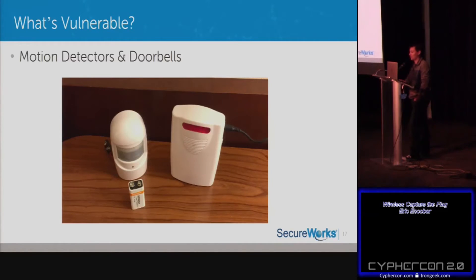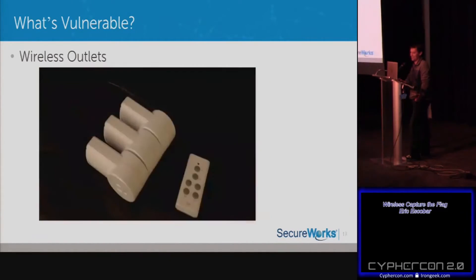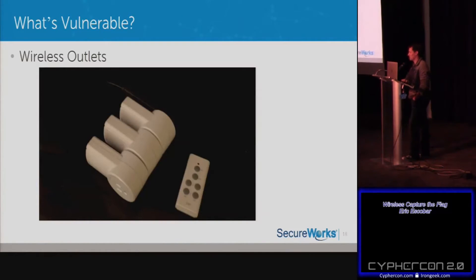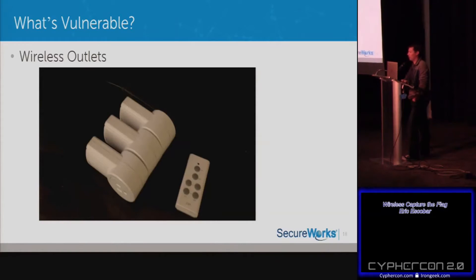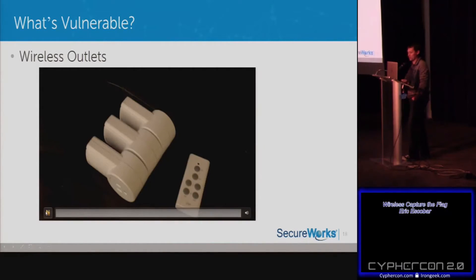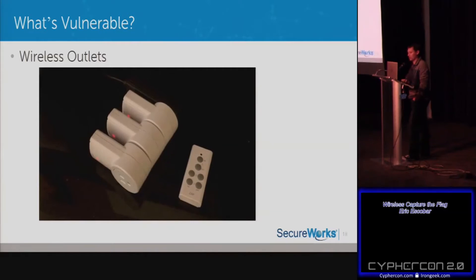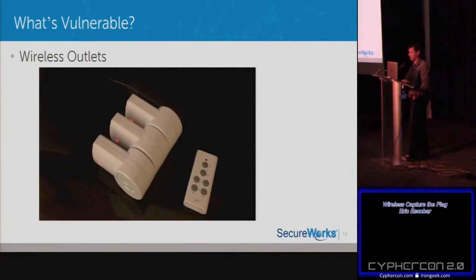Some other vulnerable devices: these eTech City wireless outlets are great for controlling backyard lights, and you can replay-attack them from a Raspberry Pi or Arduino using a cheap 433 MHz module. This will actually be one of the challenges tomorrow in the wireless CTF — you have to turn on a series of outlets in sequential order. Turning one off out of sequence will mess you up.